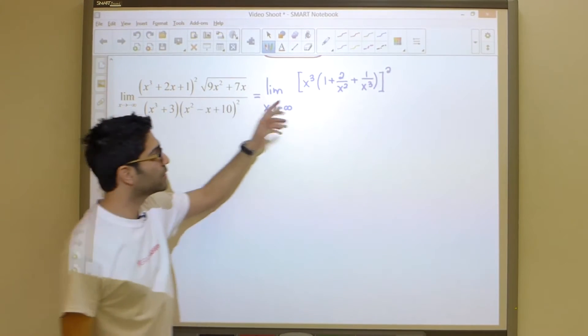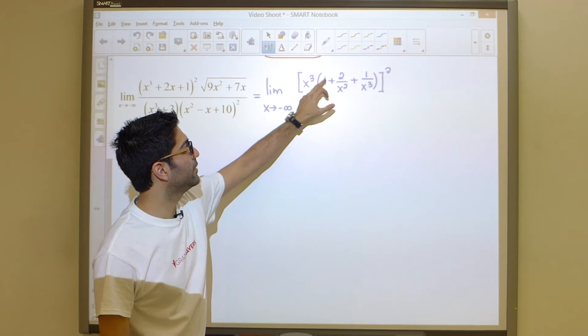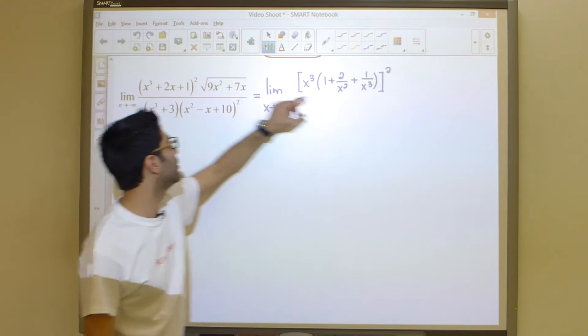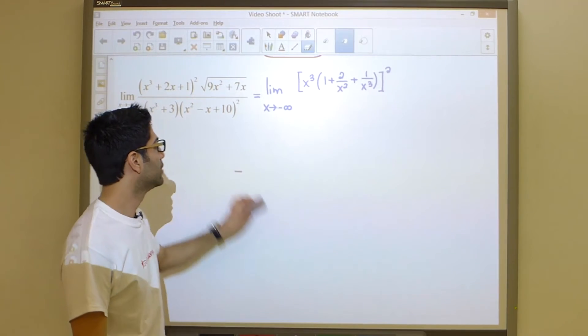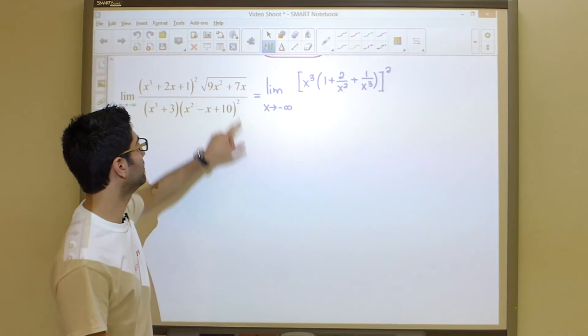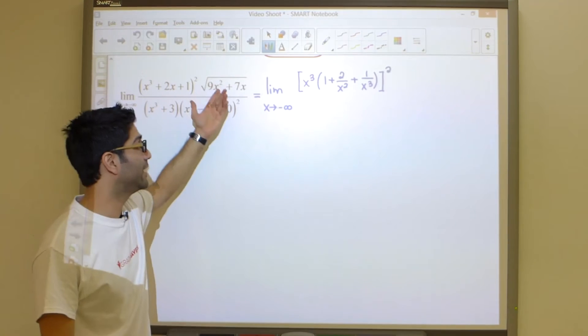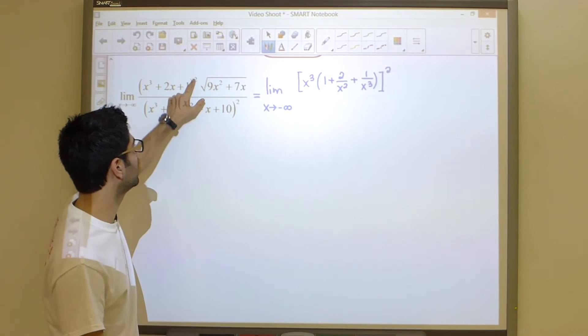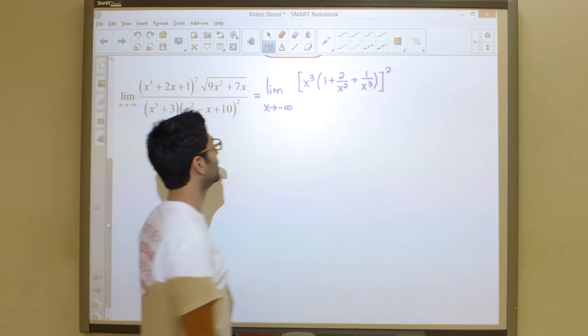So notice what I did over here: pulling out an x cubed amounts to dividing each one of these three terms by x cubed. Notice once again, if I take this and I multiply it back in, I will get the original equation back. So I'm going to repeat this process three more times.